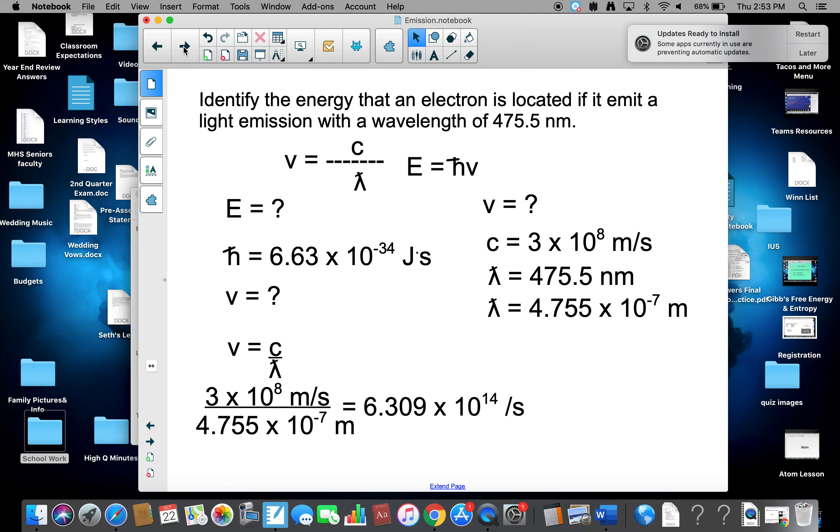We're going to leave it per second because we're going to use it in the next equation. E equals h times nu. So we get 6.63 times 10 to the minus 34th joule seconds times 6.309 times 10 to the 14th per second. My joule seconds cross out. I get 4.183 times 10 to the minus 19th joules. That's where the electron is located.